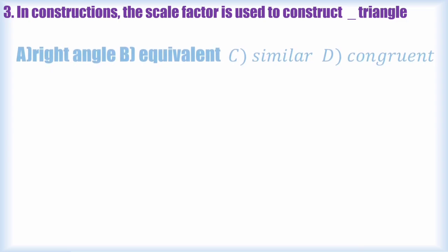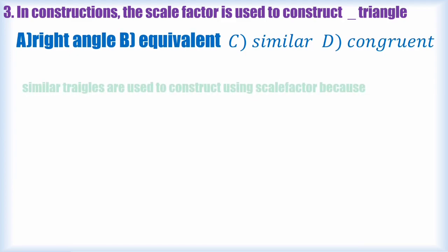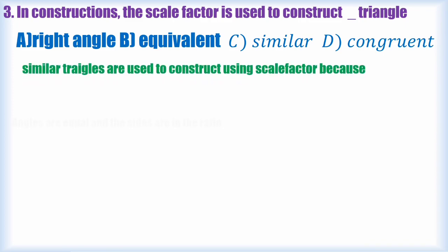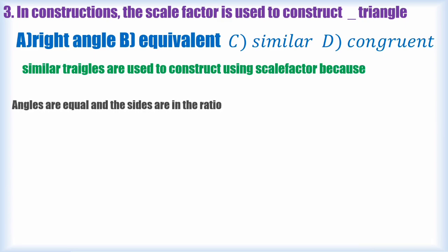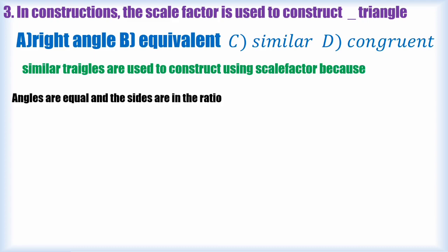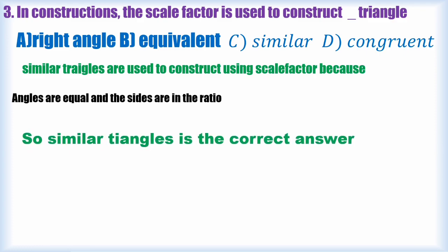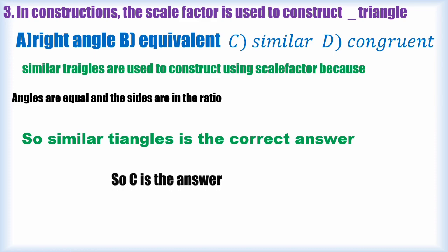In constructions, the scale factor is used to construct which type of triangle? It's a very easy question — the answer is similar triangles. We use the scale factor because angles are equal and sides are in a ratio, so we invoke that factor to construct the similar triangle. Option C is the answer. Students should know the definition: similar triangles have sides in ratio.